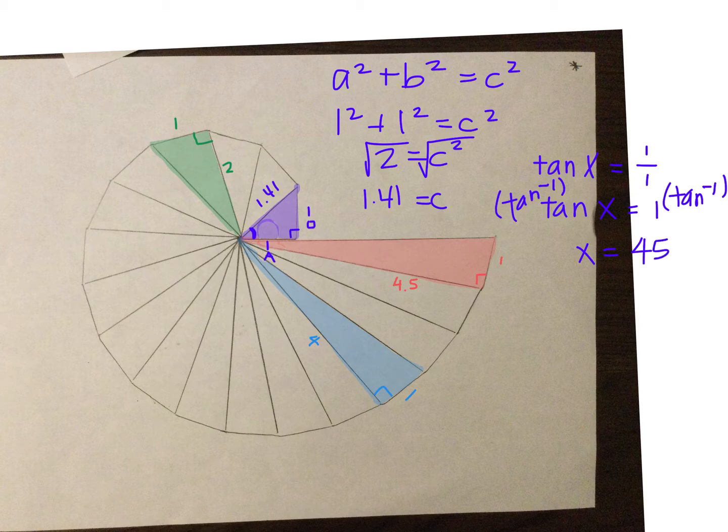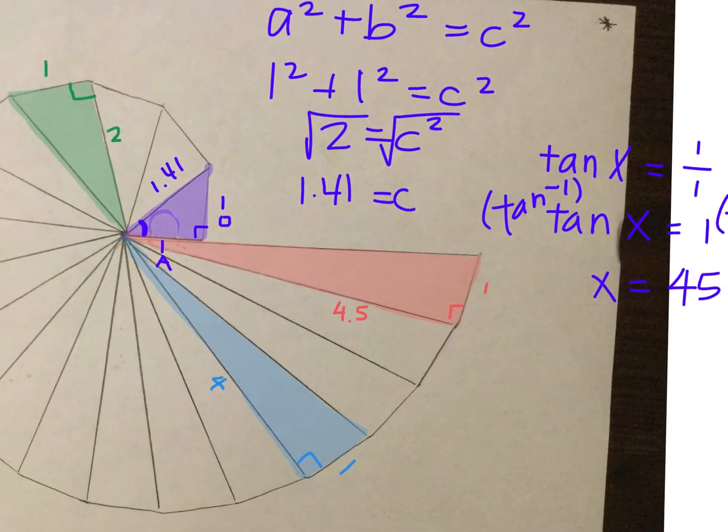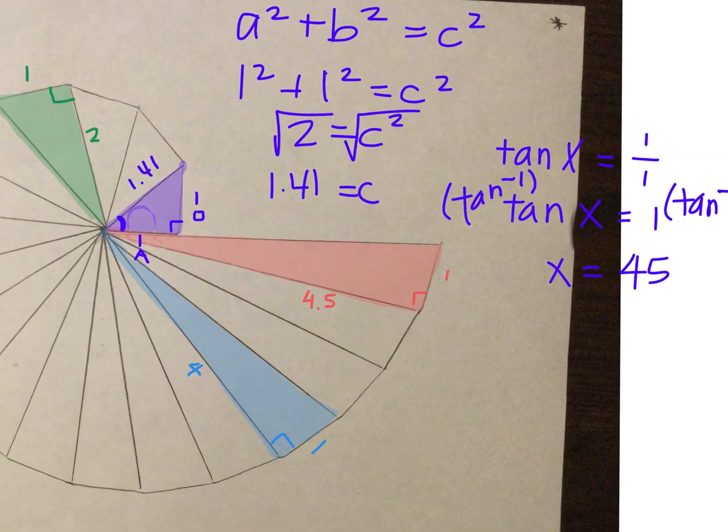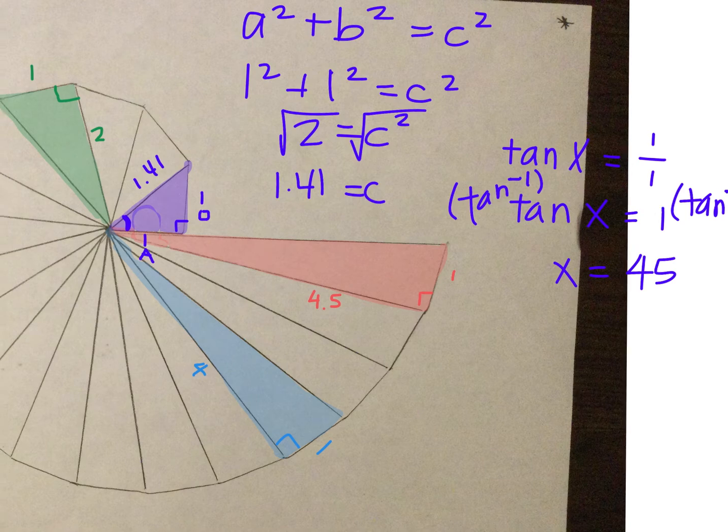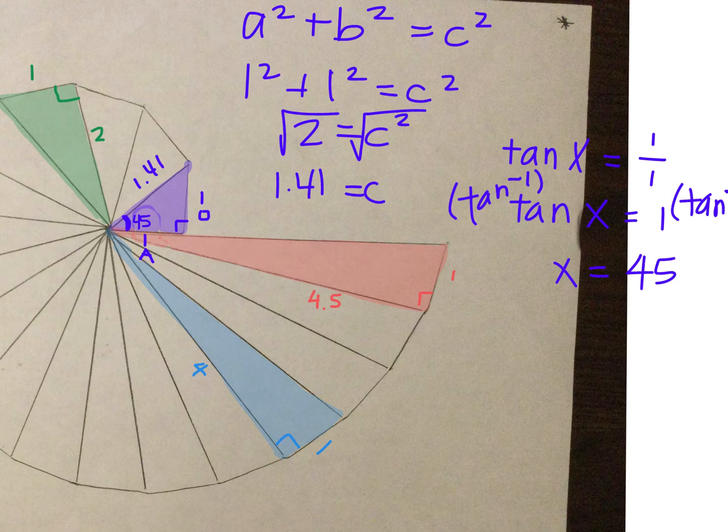So I know that this missing angle right here in purple is going to be 45. Now the only thing I have left is to find this other missing angle. To do that, I'm going to take a part. My first part is going to be 90 plus a part. My second part is going to be that 45.